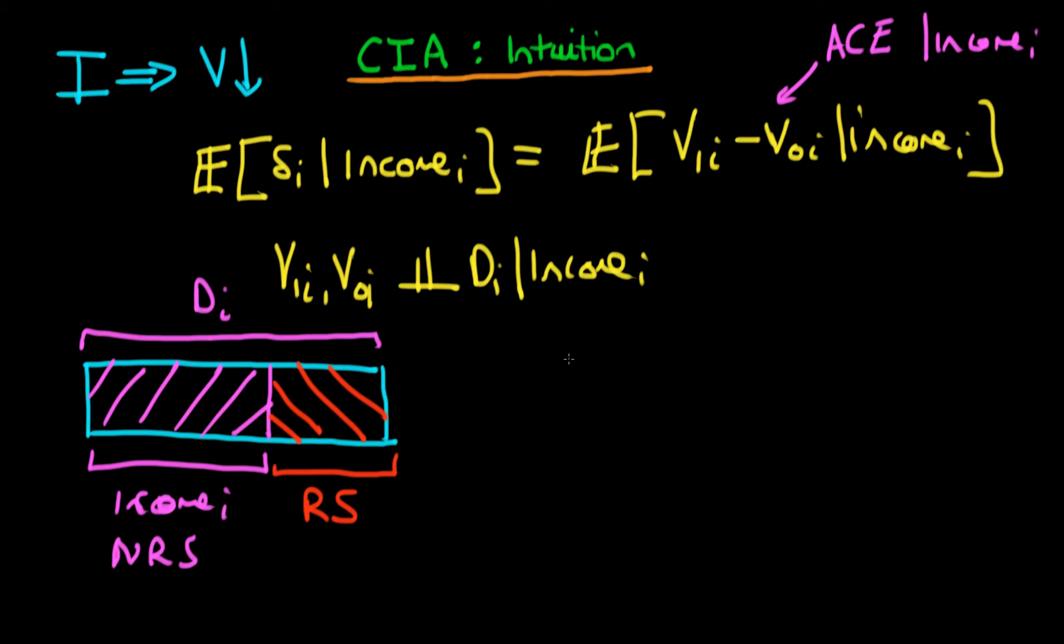Another way to think about this is if you imagine doing a regression of Di. So you're regressing Di on the level of income, and there is also an error term which captures all the other effects, or the other part of Di, which is random, essentially.